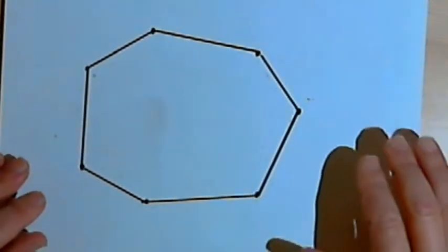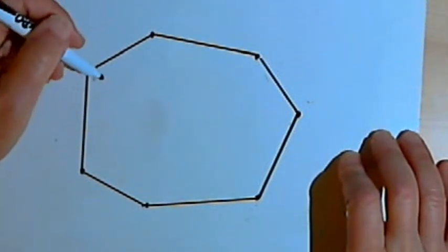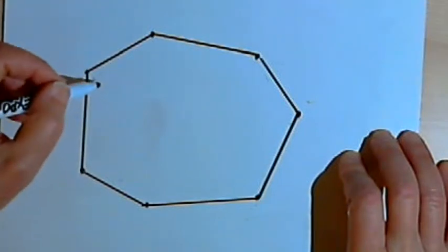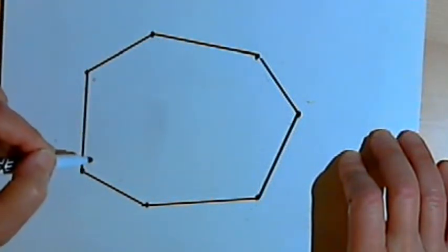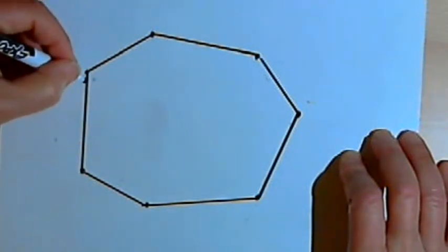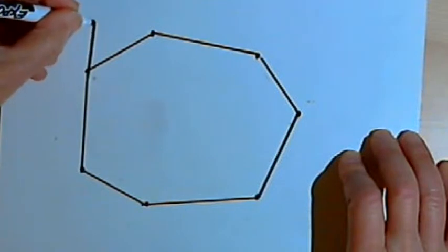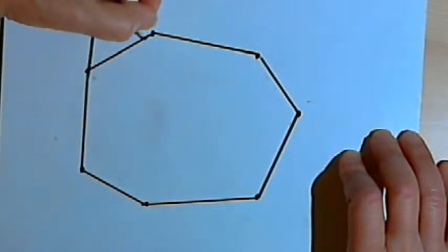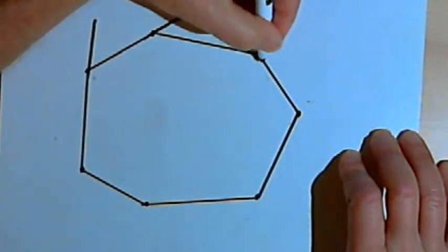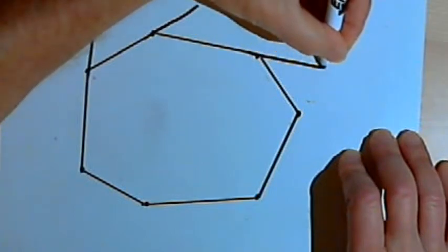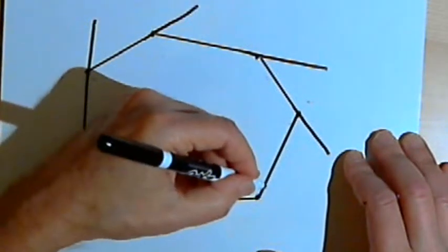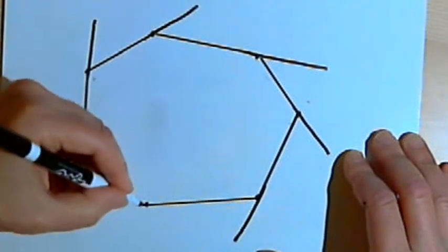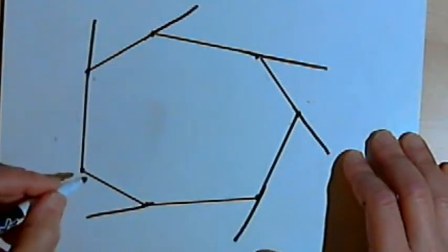I've got a polygon here — it's irregular and it's convex. I know it's convex because all of the interior angles measure less than 180 degrees. Now what I'm going to do is draw exterior angles at each of the vertices, and what I want to find out is if I added up the measures of all of those angles, what would I get?